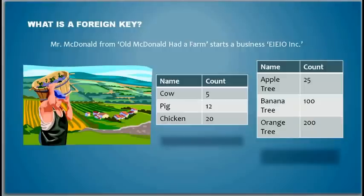In the previous videos we talked about this popular nursery rhyme, Old MacDonald Had a Farm, E-I-E-I-O. So let's just assume Mr. MacDonald from that rhyme starts a business — he calls it E I E I O Inc.